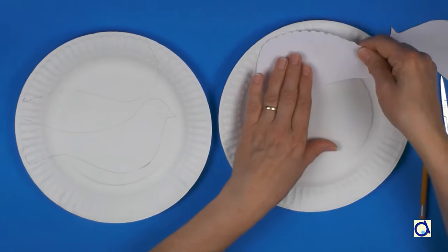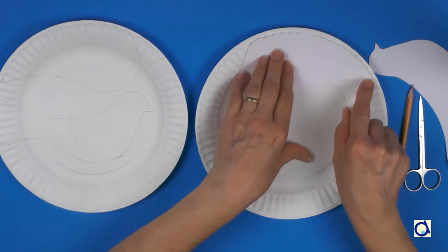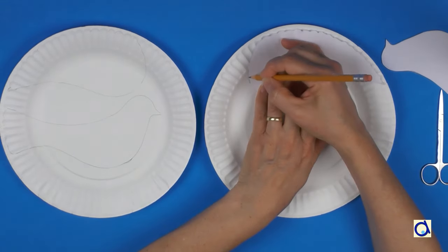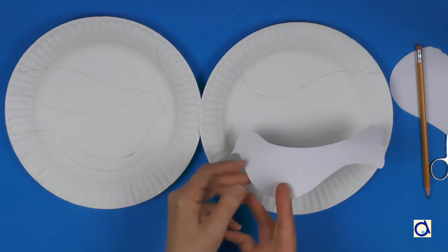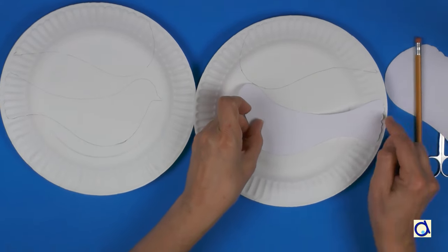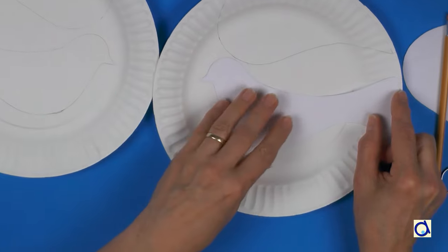Take another plate, invert the pattern of the wing and trace around the pattern with a pencil. Then take the pattern of the body of the dove and also invert it and trace the outline.